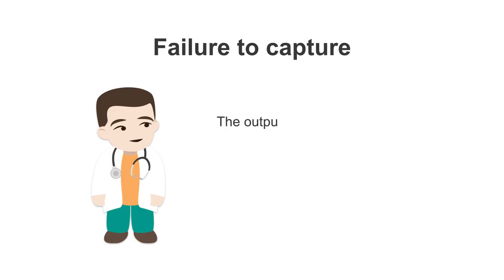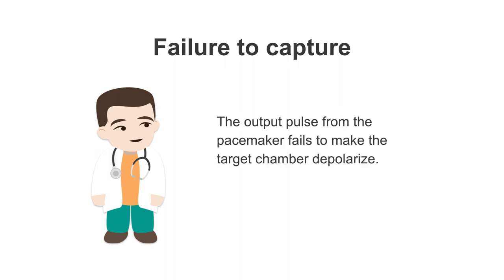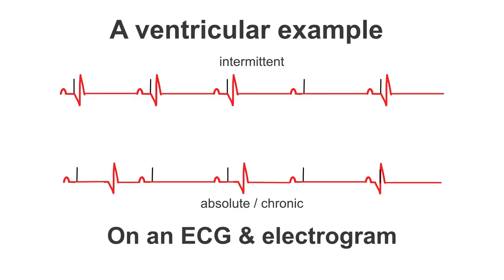Failure to capture is when the output pulse from the pacemaker fails to make the target chamber depolarize. Let's have a look at this on an ECG. Here we can clearly see that the output pulse, which is represented by this pacing spike, has triggered a ventricular depolarization, and that is what we would usually expect to see.